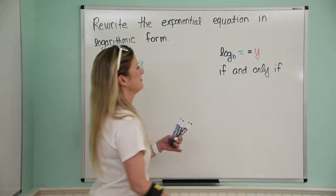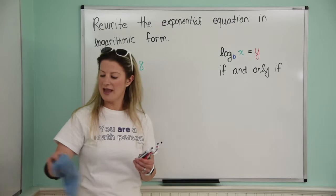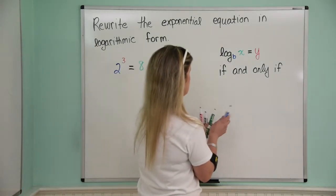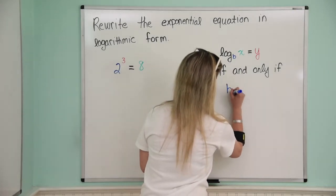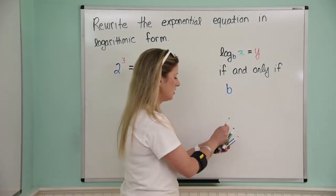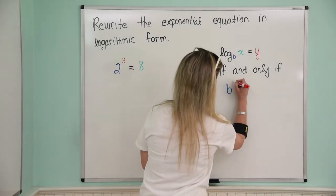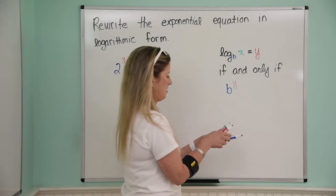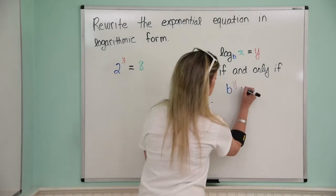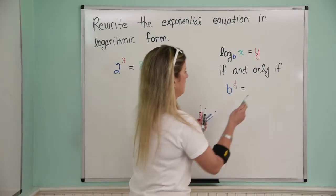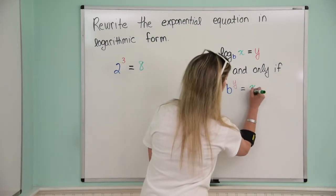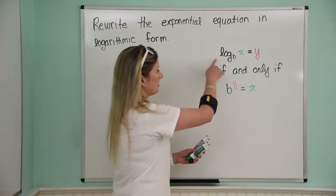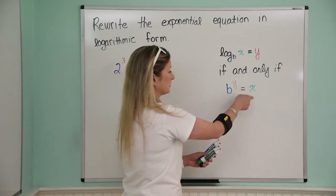Okay, so log base b of x equals y, if and only if, where are we here? Make sure my colors are correct. B, oh no, there goes the cap, b to the y, see I broke this marker after the last take, equals x.